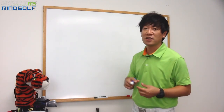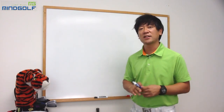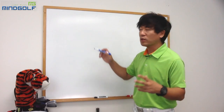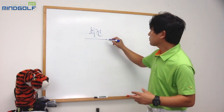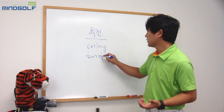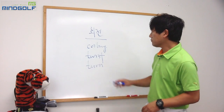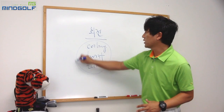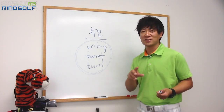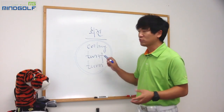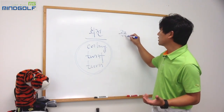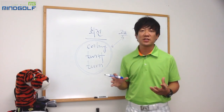비거리를 위해 하체를 리드한다는 측면이 있는데, 골프는 상체랑 하체가 꼬임 운동을 하잖아요. Y골프에서도 얘기했지만 골프에서 몸의 움직임은 회전이라는 측면으로 이야기합니다. 코일링이라는 단어를 쓰기도 하고, 트위스트라는 단어를 쓰기도 하고, 턴이라는 단어를 쓰기도 합니다. 이 모든 단어의 특징은 회전이라는 거죠. 코일링이란 구리선에 코일을 감아놓는 것처럼 감는 것이고, 트위스트는 꼬는 것이고, 턴도 회전을 하는 것입니다.